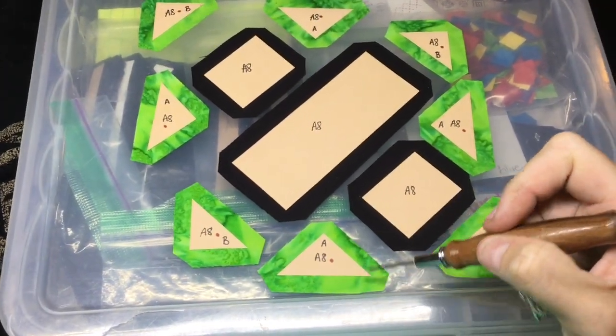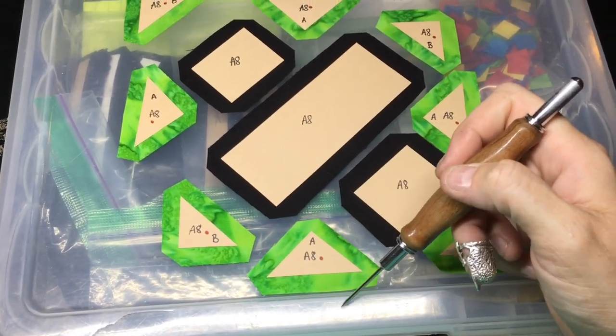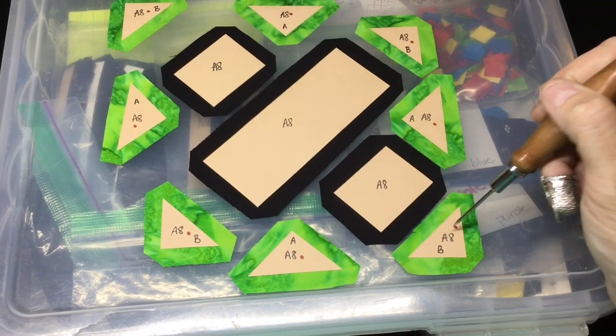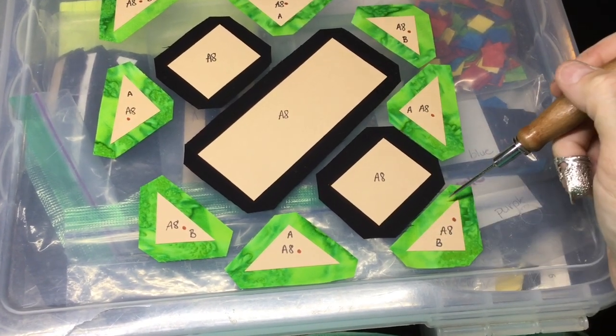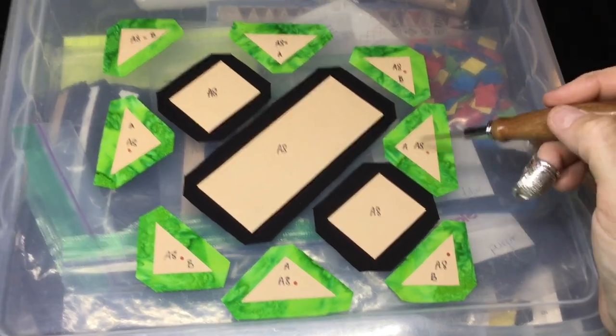For these pieces here, I'm going to baste the hypotenuse first, then the legs, so then my tags are going to go away towards the sashing. These right here, I'm going to baste the legs first, then the hypotenuse, so then my tag goes away towards the sashing.